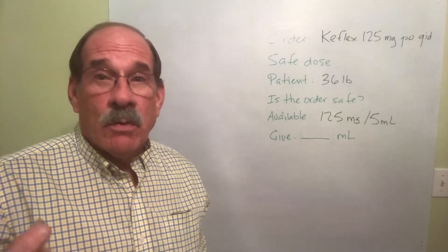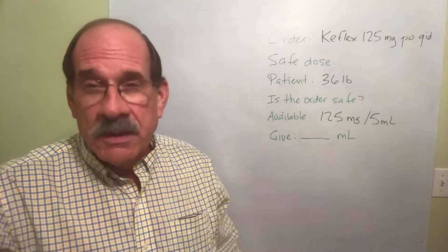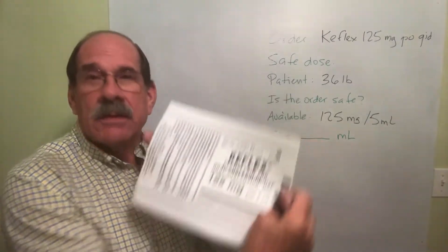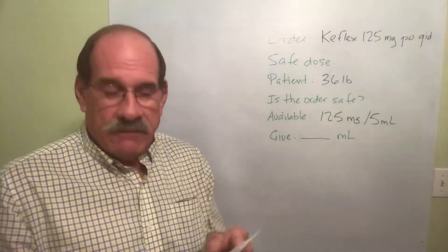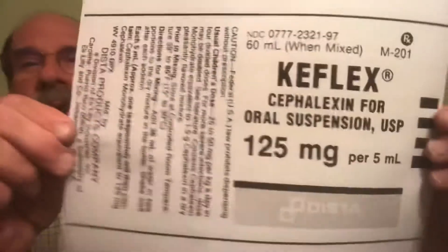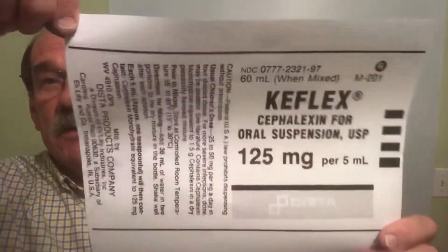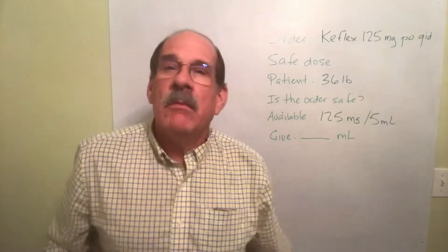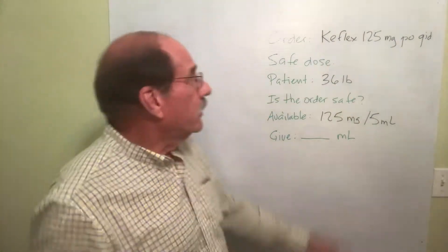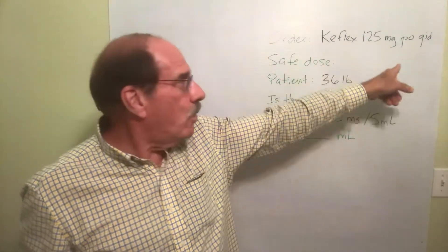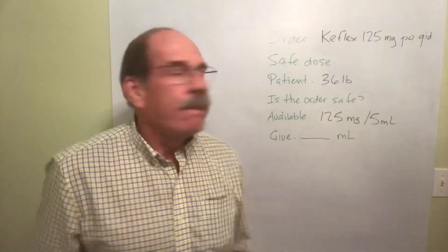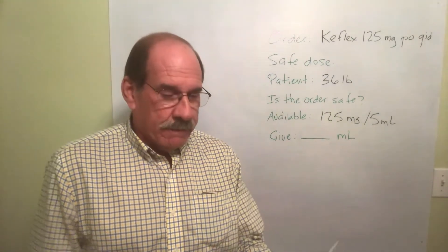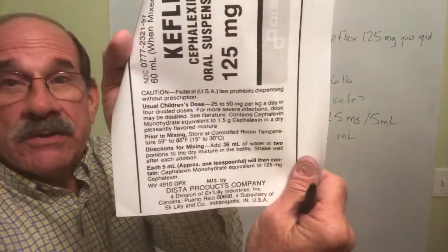Here we are with another one. If you watched the previous one, this is another one; if you didn't, this is brand new to you. There's also a label available to print out if you're in this course. The order is for Keflex — the prescriber ordered 125 milligrams of Keflex PO QID. Is it safe? I need to see if it's safe. I look at the label.